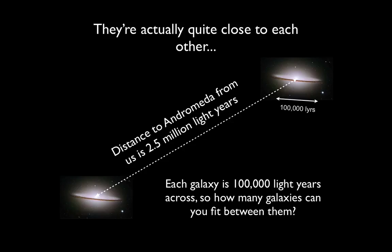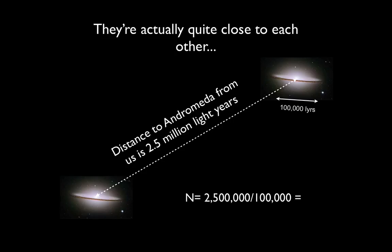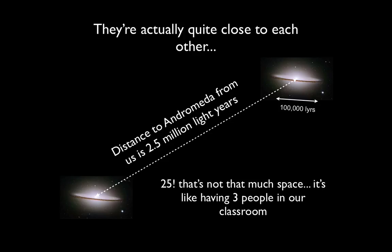If each galaxy is about 100,000 light years across and the distance between galaxies is about 2.5 million light years, how many galaxies can you fit between the Milky Way and Andromeda? We calculate by dividing the distance between them — 2.5 million light years — by the size of a galaxy — 100,000 light years. We come out with 25. Twenty-five galaxies could fit between us and Andromeda. That's really not that much space.